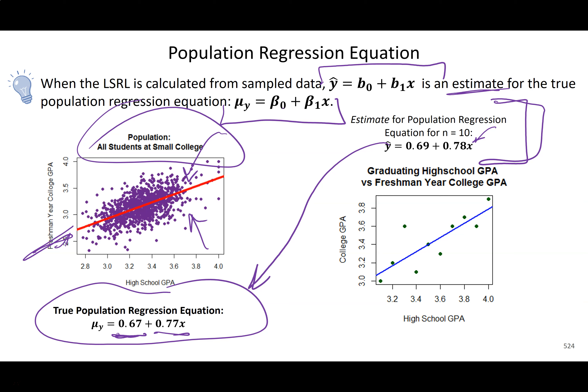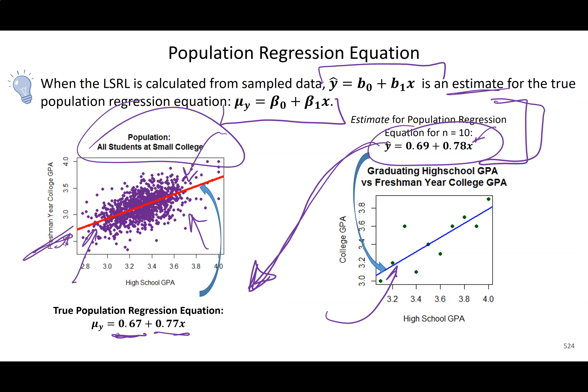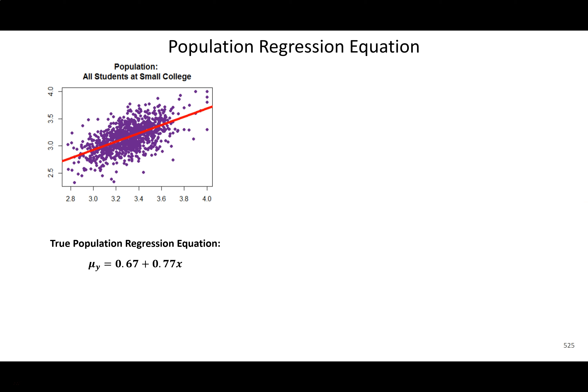Most of the time we won't be fortunate enough to know the true population line. What we really need to count on is that we have a representative sample — usually the easiest way is a random sample. The red line is the population equation, the blue line is the sample estimate. So when I have the entire population data and fit a line that's simultaneously as close to all those points as possible, that's my population line.